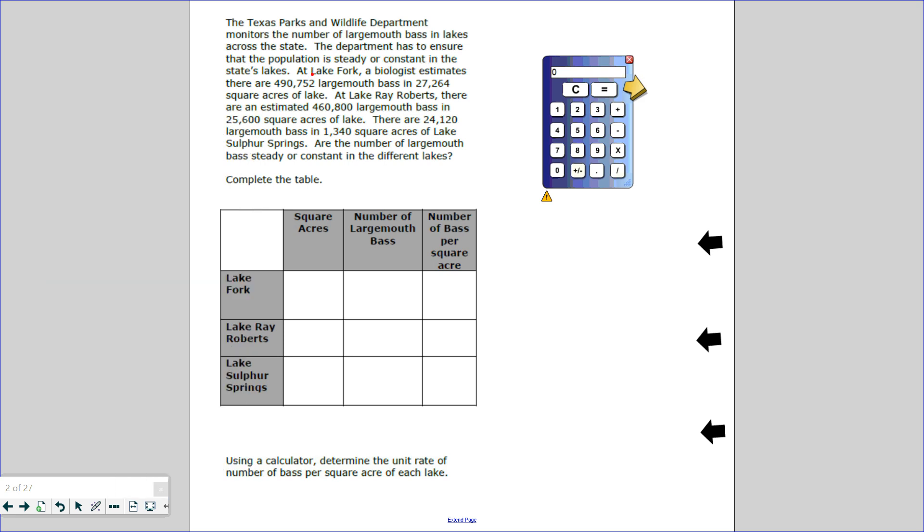At Lake Ray Roberts, there are estimated 460,800 largemouth bass in 25,600 square acres of lake. There are 24,120 largemouth bass in 1,340 square acres of Lake Sulphur Springs. Are the number of largemouth bass steady or constant in the different lakes? So we're going to find that out.